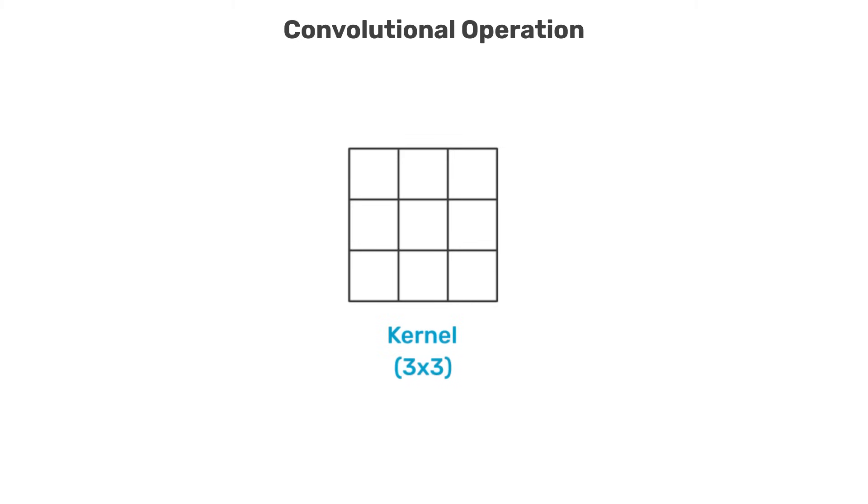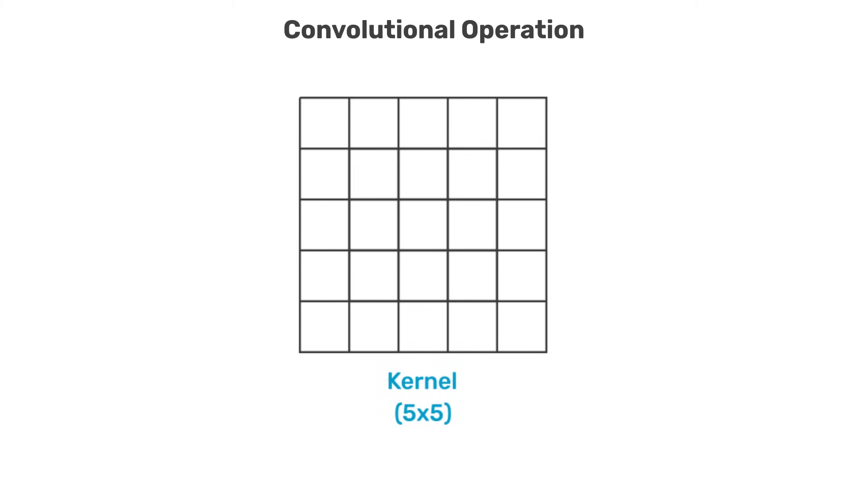Usually 3x3 or sometimes 5x5, which is used to process an input image and transform that image to something that might be more useful for downstream processing.